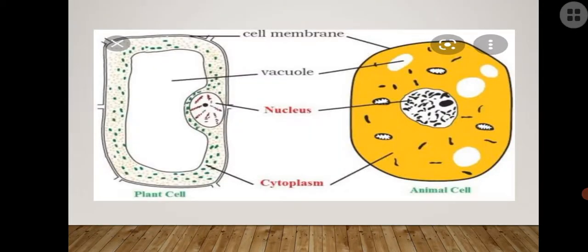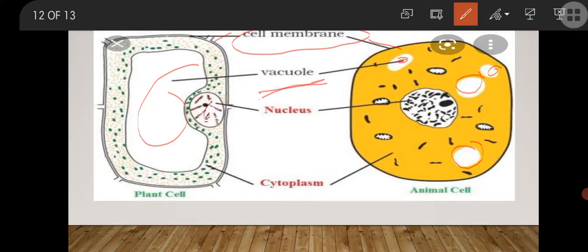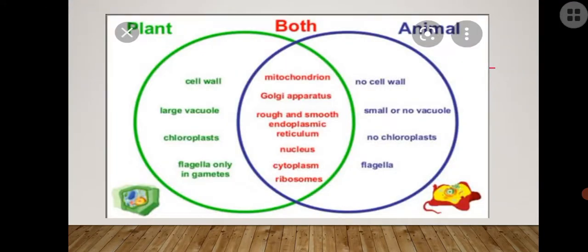Now these are the structures of plant cell and animal cell from your textbook. You can see the cell membrane as the outer covering for both. Vacuoles are the large empty spaces inside the cell. The nucleus is the dense spherical body, and cytoplasm is the space between the nucleus and the plasma membrane. In a plant cell, one extra layer is present outside the plasma membrane, called the cell wall.